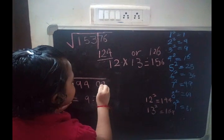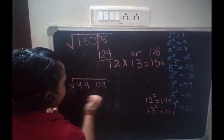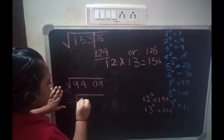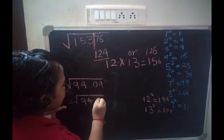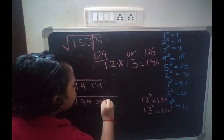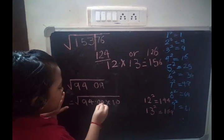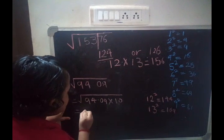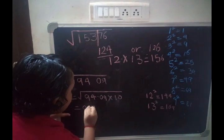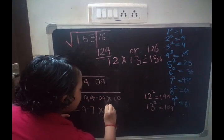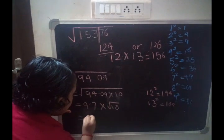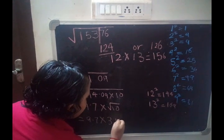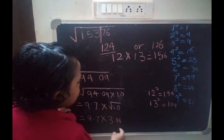Now, if the decimal is in an odd position, what do we do? First, we bring the decimal to an even position. So it becomes 9409, and we multiply by 10 because we are moving the point 1 place from the right-hand side. You know the answer of 9409 is 97, so the result is 9.7. We then multiply 9.7 by the square root of 10. The square root of 10 is 3.16, so we do 9.7 × 3.16 to get the answer.